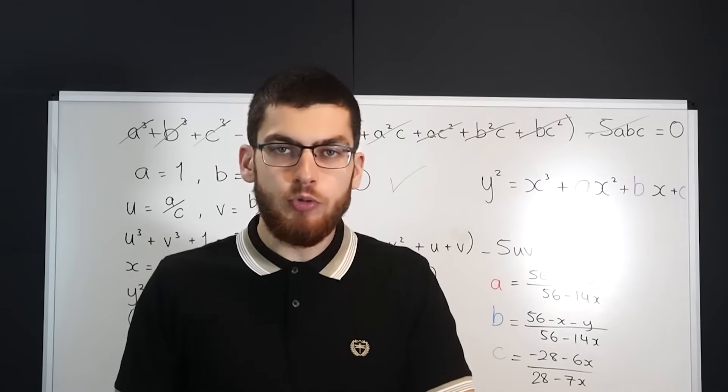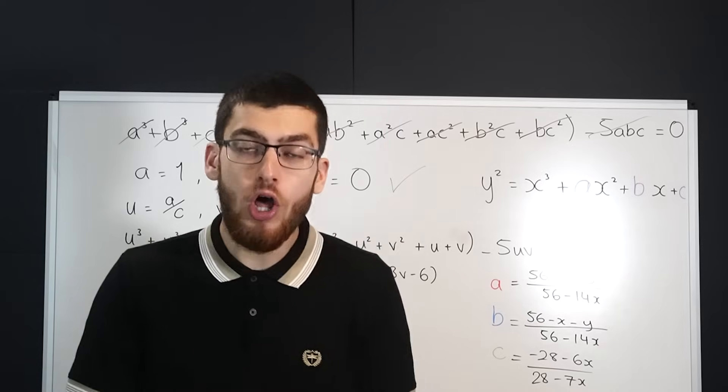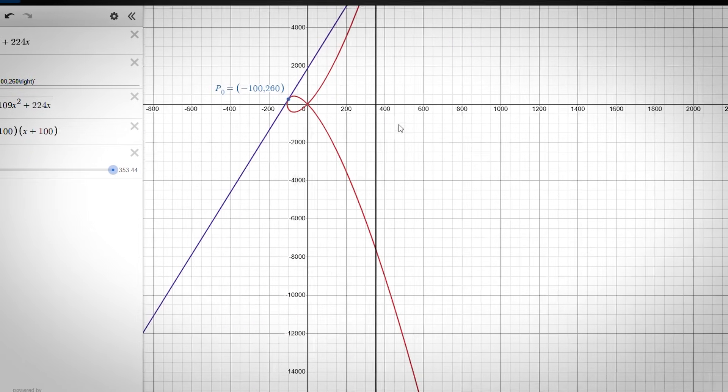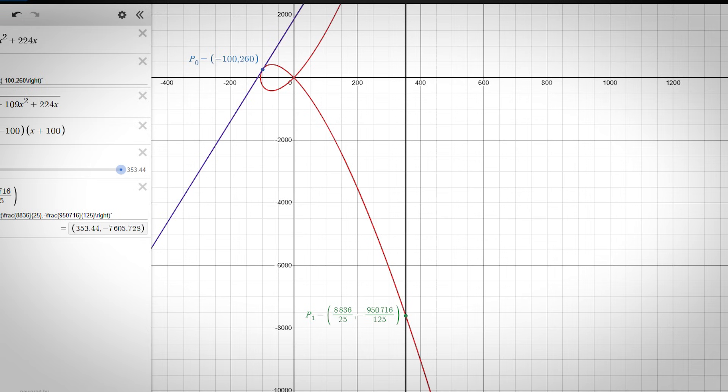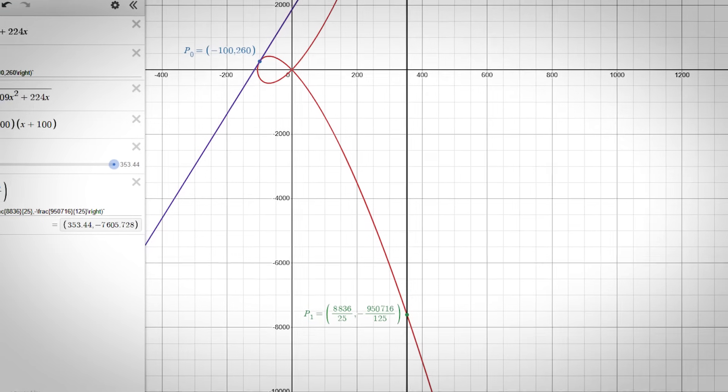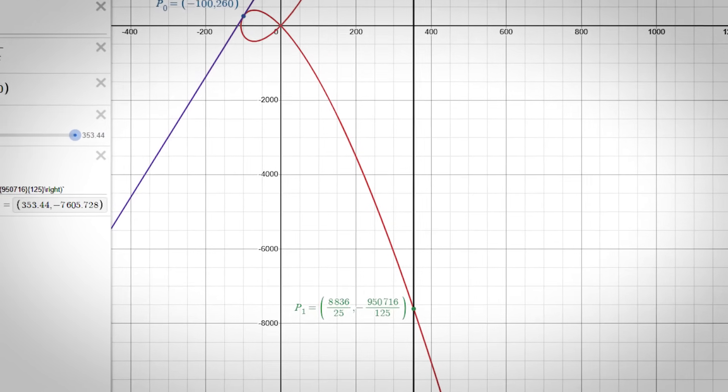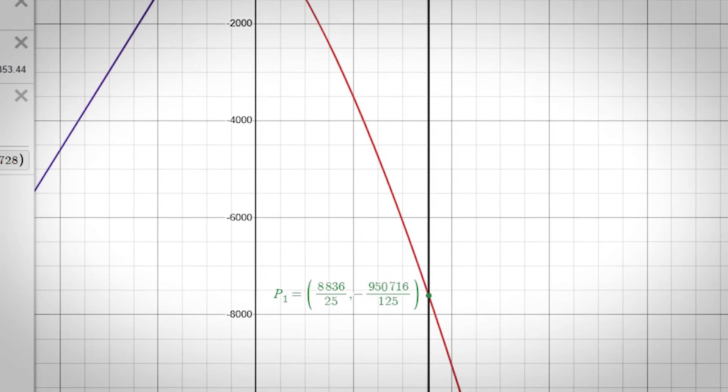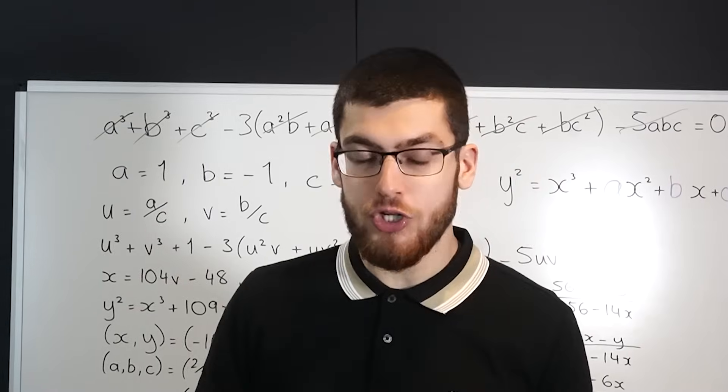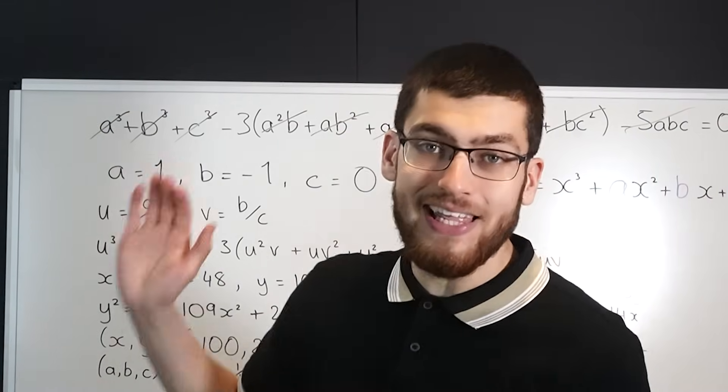To find our next solution we're going to have to use a computer to find the tangent to our solution p sub 0 and then find the chord which reflects it in the x-axis to get p sub 1. p sub 1 gives us x equals 8,836 over 25 and y equals minus 950,716 over 125 which is another solution of this but it still isn't positive.